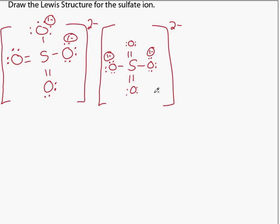With two double bonds to place in four possible locations, there are a total of six different ways to draw the Lewis structure of the sulfate ion.